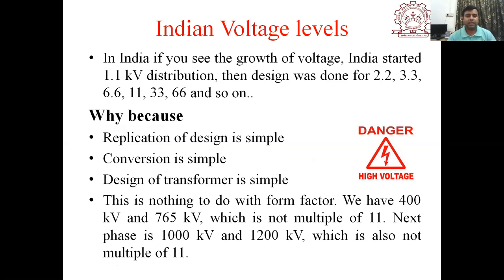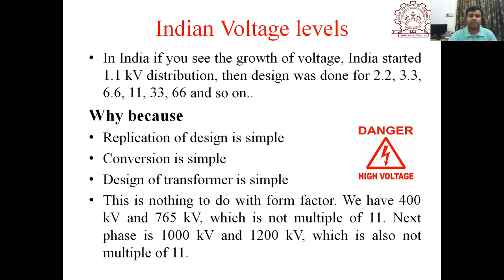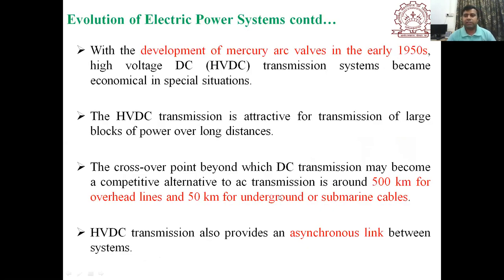Students often ask why voltage levels seem to be multiples of 11 — like 11, 33, 66, 132 kV. This is not actually because they are multiples of 11. Voltage levels of 400 kV and 765 kV are not multiples of 11. Upcoming planned levels of 1,000 kV and 1,200 kV are also not multiples of 11. It is simply because replication of design is simple, conversion is simple, and transformer design is simple. It has nothing to do with the form factor.